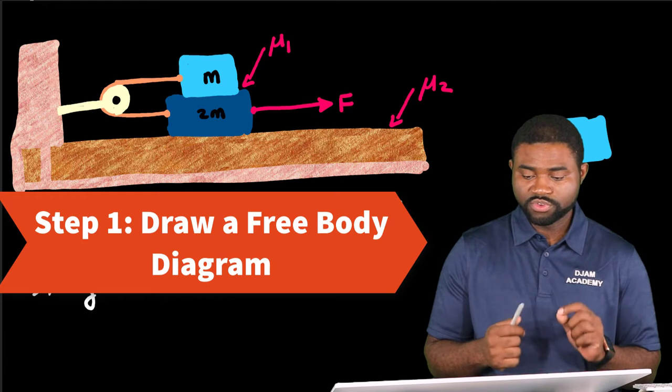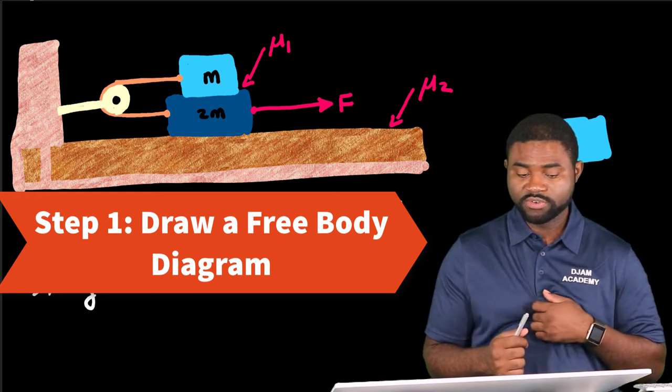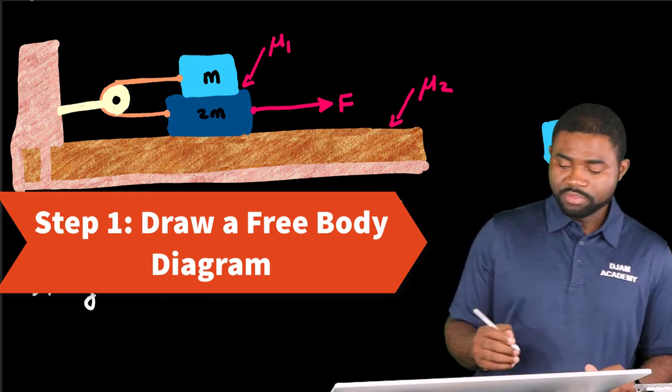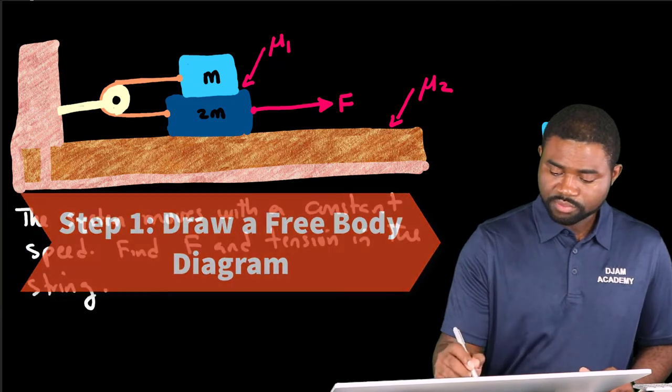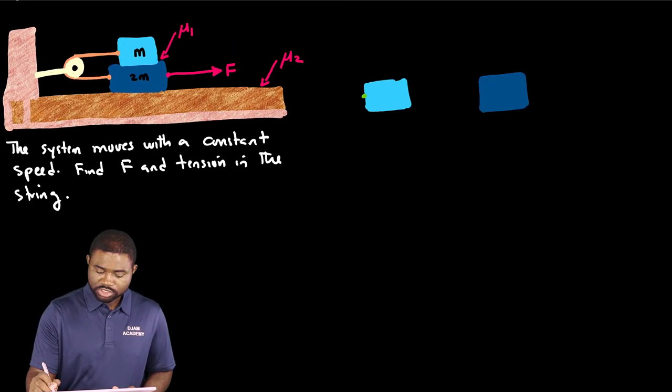The very first thing we need to do is to draw a free body diagram. Remember that there is tension acting in this direction on block one. Let's call this tension T.